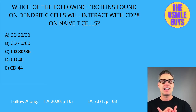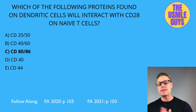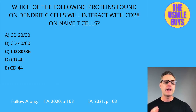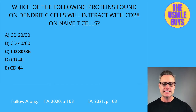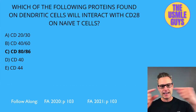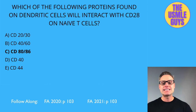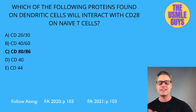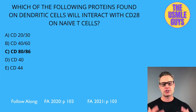For B-cell activation and class switching: the B-cell receptor takes in an antigen and presents it on MHC2, which is recognized by the TCR on the helper T-cell. A CD40 receptor on the B-cell binds to the CD40 ligand on the T-cell. The T-cells then secrete cytokines that determine immunoglobulin class switching. B-cells then undergo class switching, affinity maturation, and antibody production begins.